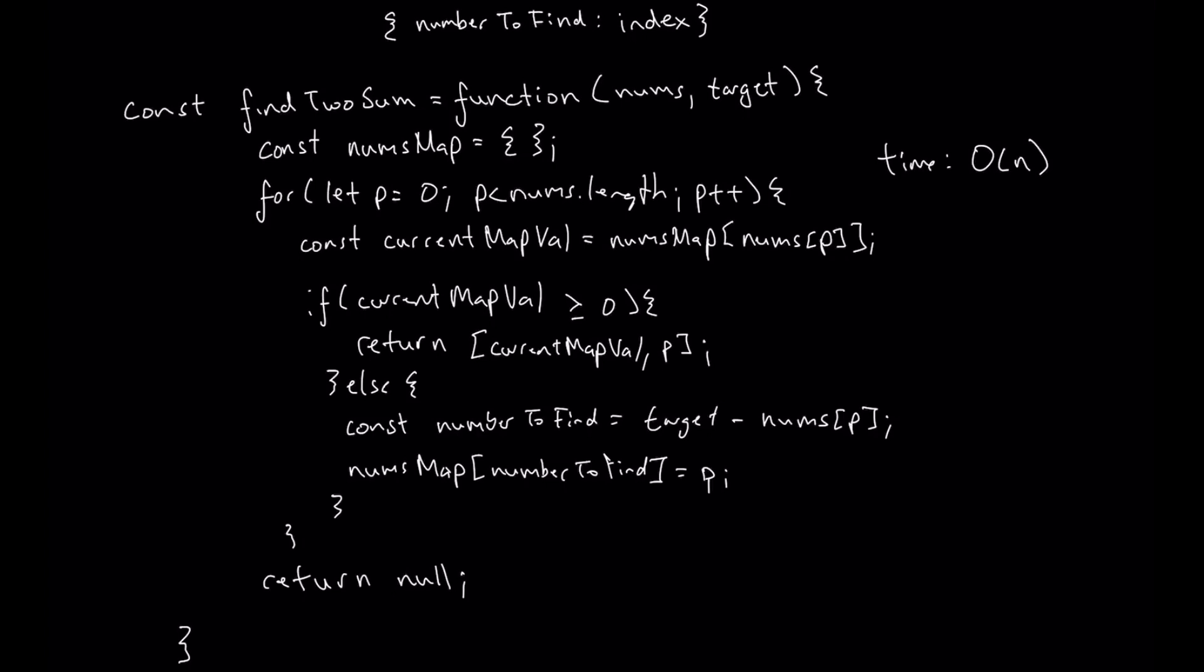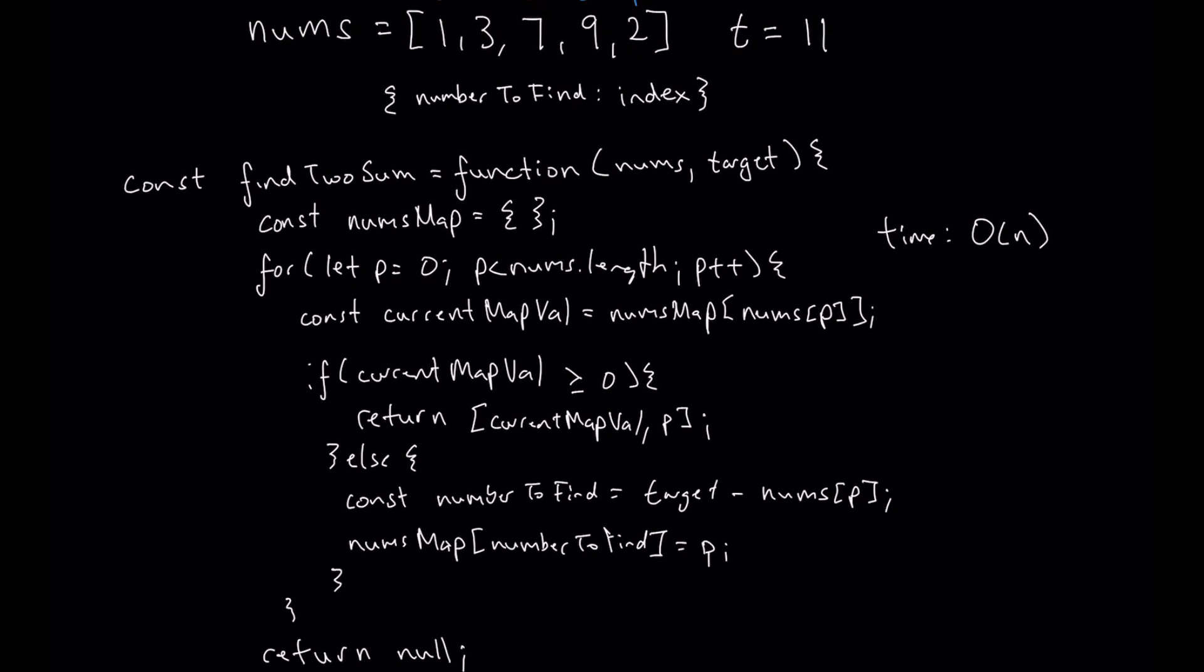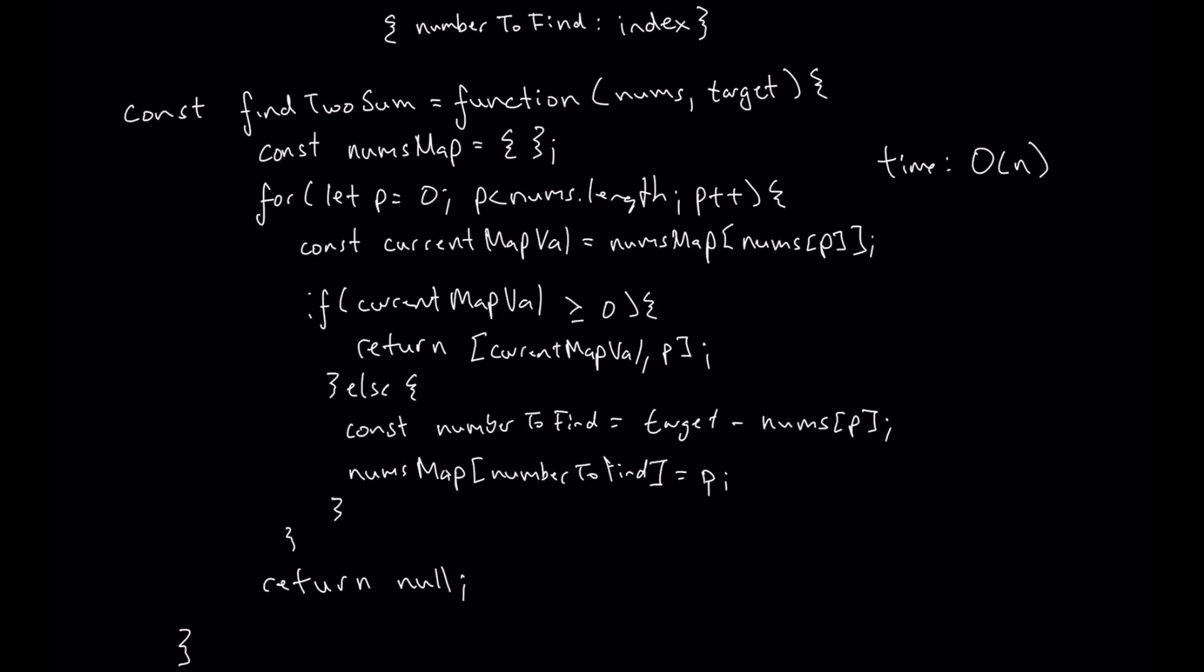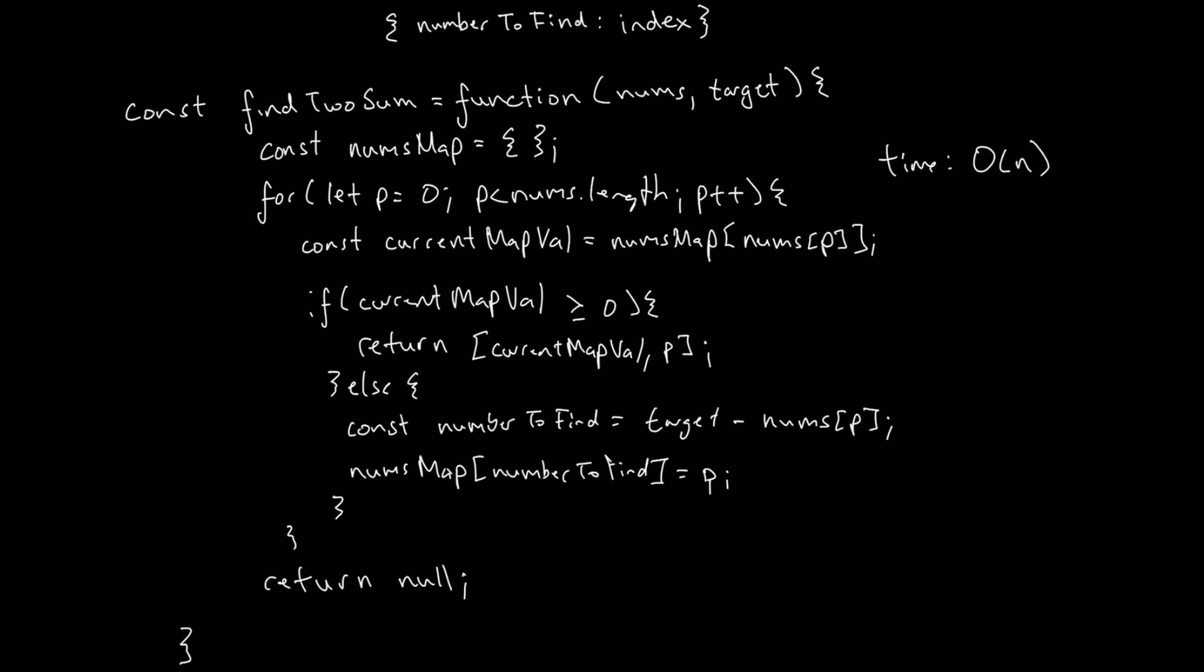Space complexity, on the other hand, has grown from what we had before because here we notice that our nums map actually grows every time nums increases. Because as the nums increases, the chances that we store more values in our nums map also increases. There's a case, even with our current array, where the answer is the last two values, which means that we have generated a number to find and stored it in our nums map for every single value that came before this solution. So in a worst case scenario, we also have a space complexity of O(n). So that's what we're going to write. Space is O(n).